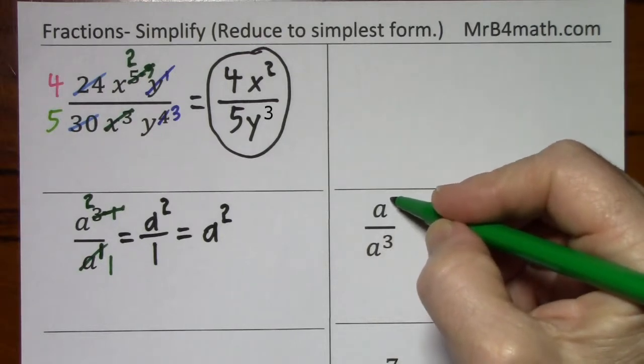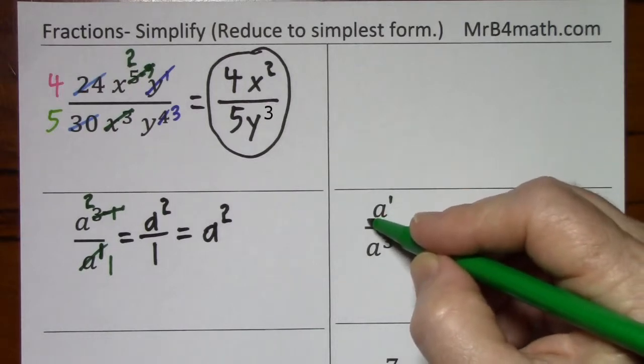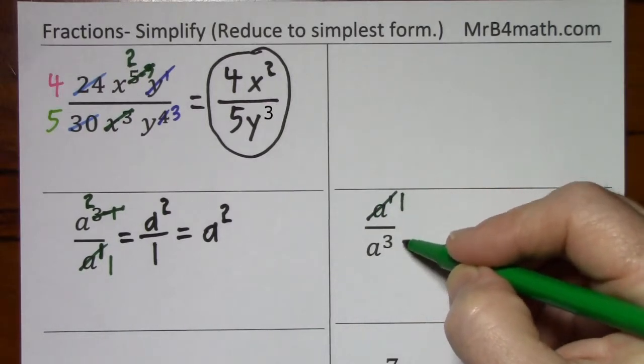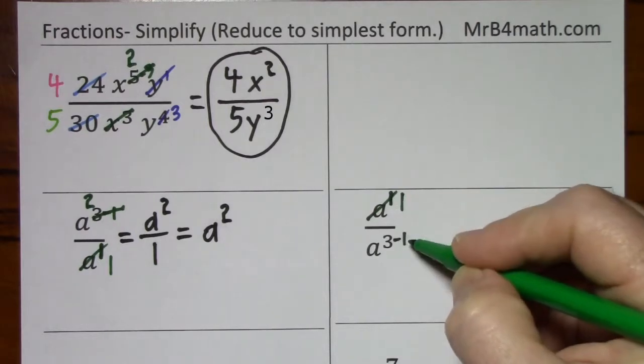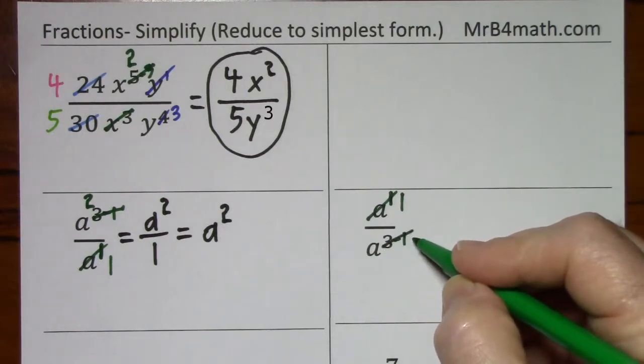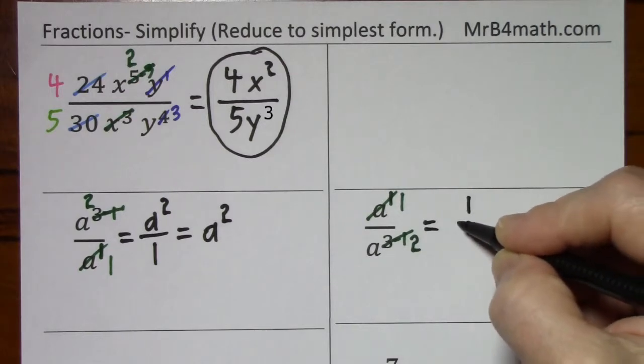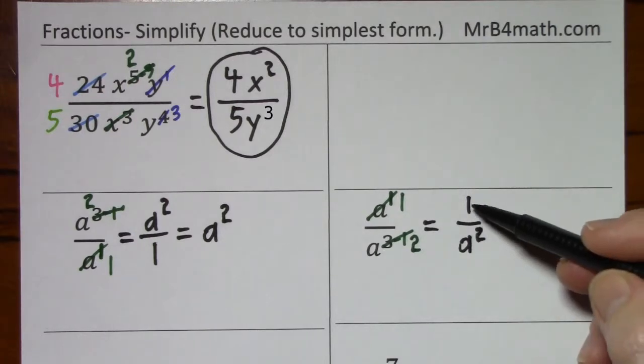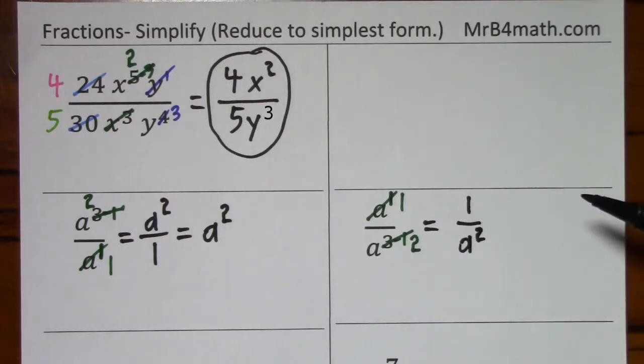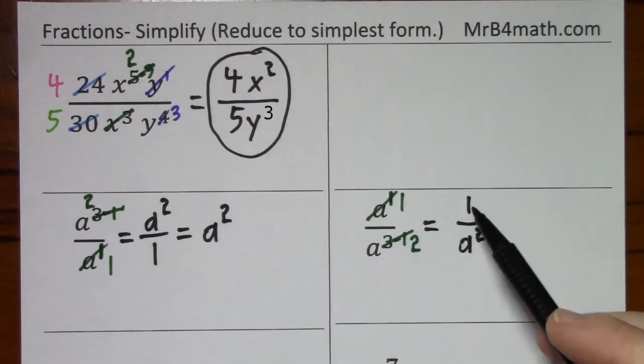Over here, this is a to the first power. So based on the rules of exponents, I can cross this out and put a 1 if I subtract this 1 from the denominator. And 3 minus 1 is 2. So now we have 1 over a squared. I need this 1. I can't leave air in the numerator. So in this case, this 1 was important. It didn't just disappear, it shows up in my answer.